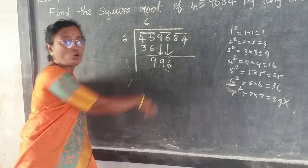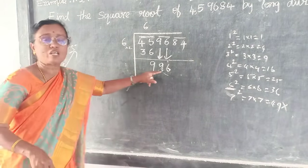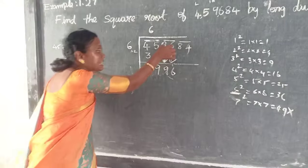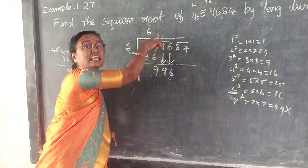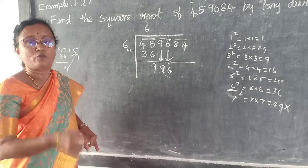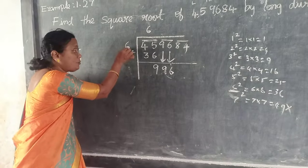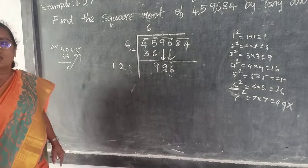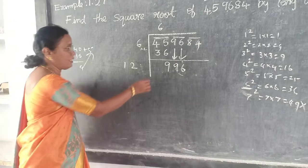This should be multiplied by 2. Remember: the previous quotient digit is multiplied by 2. So the result is 12. You have to choose your number based on this.